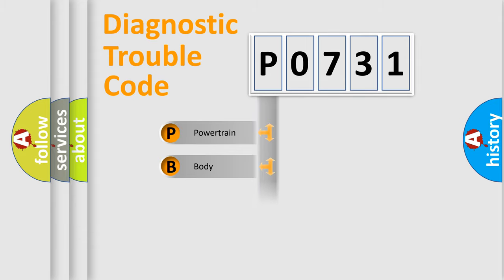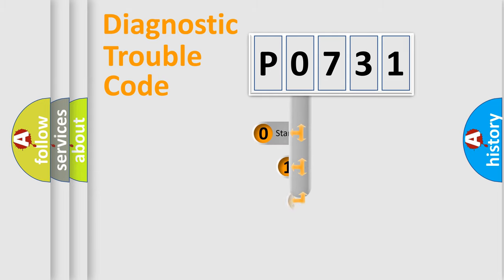Powertrain, Body, Chassis, Network. This distribution is defined in the first character code.